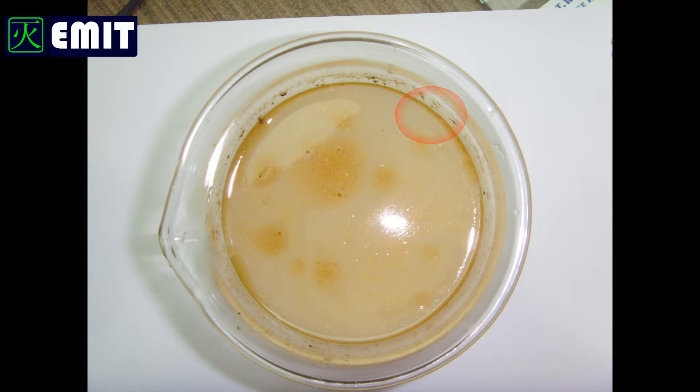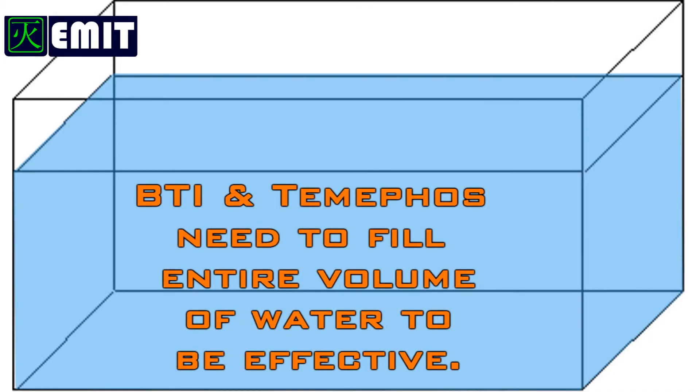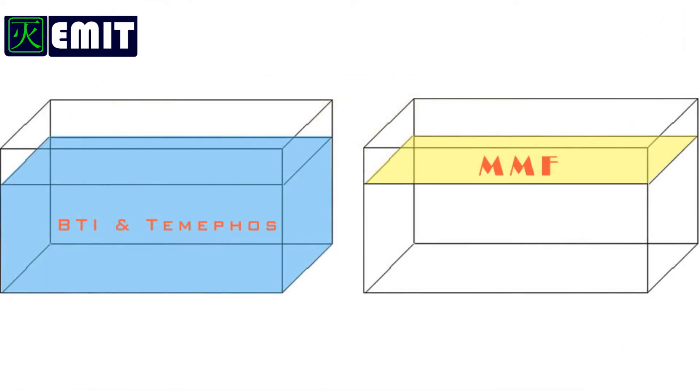Number two: The coverage of MMF is much bigger than other mosquito control products. BTI and 10 fos need to dissolve and fill the entire volume of water for it to be effective. MMF controls the same volume of water by protecting the water surface, which means only a small amount of MMF is required as compared to BTI and 10 fos.